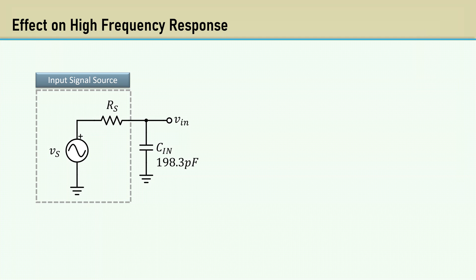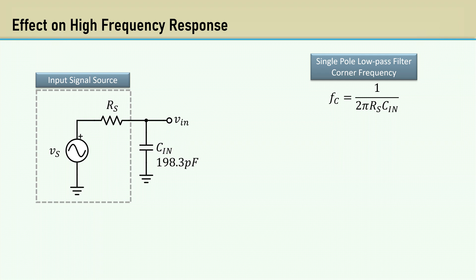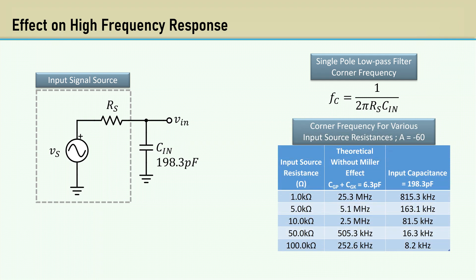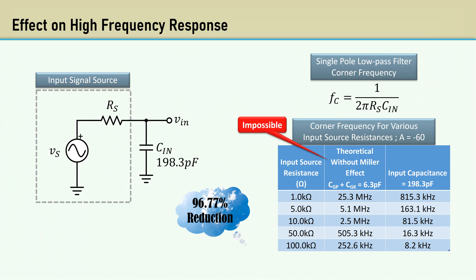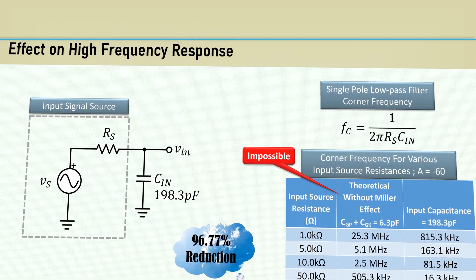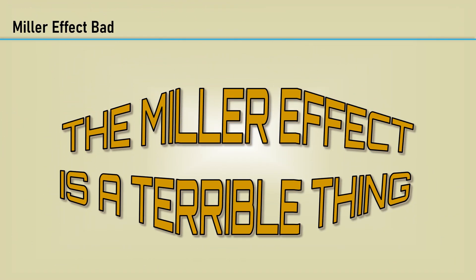Consider an input signal source, Vs, that has a source resistance, Rs. With the equivalent input capacitance and source resistance, this makes a single-pole low-pass filter. The equation for the corner frequency is 1 over 2 pi times the source resistance times the input capacitance. Here's the corner frequencies for various source resistances and a gain of minus 60. This table also has the theoretical corner frequencies without the Miller effect, which of course is impossible. But anyway, it represents a 96.77% reduction in bandwidth due to the Miller effect. The Miller effect is a terrible thing. Wrong.